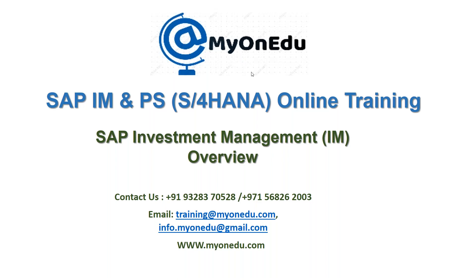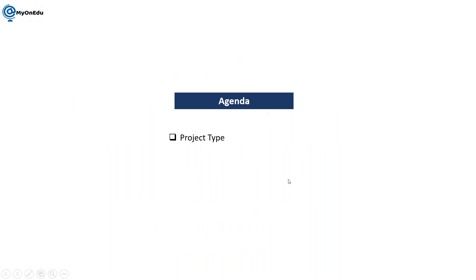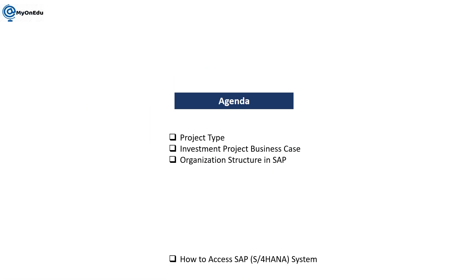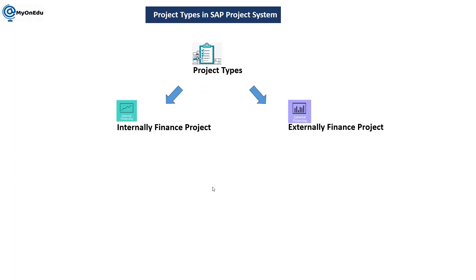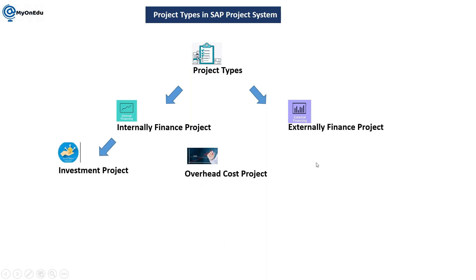My agent will explain the concept of project type, investment project, and business case. We have already completed the organization structure in SAP and how to access SAP. So let me directly jump to the concept of project type. We are having majorly two types of project: one is internally financed and the other is externally financed. Internally financed includes investment project, customer project, and cost project; externally financed includes customer project.